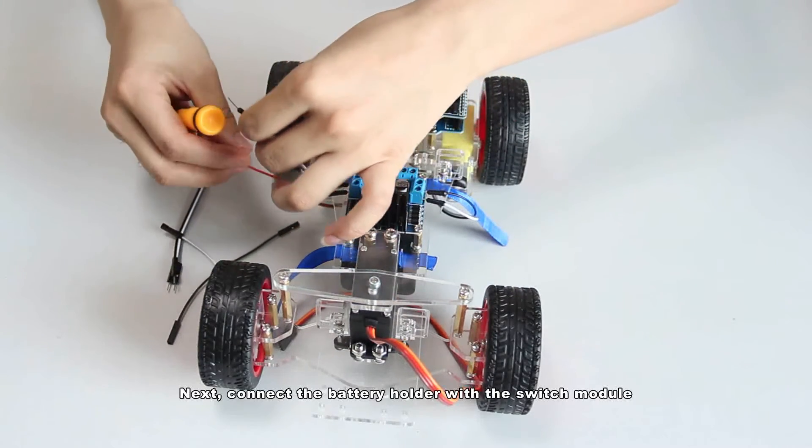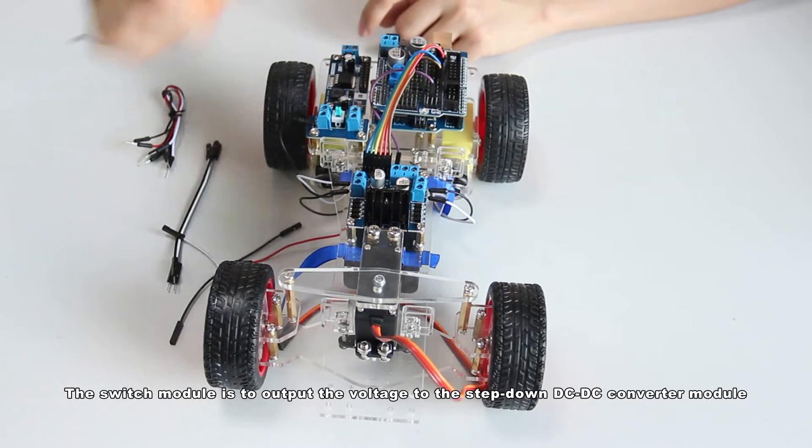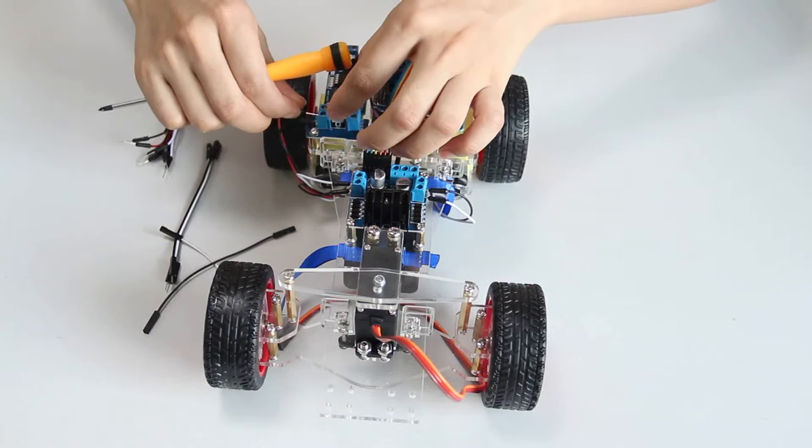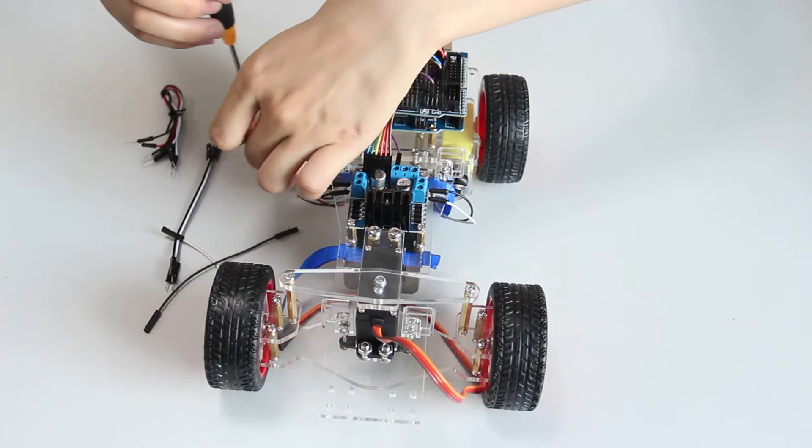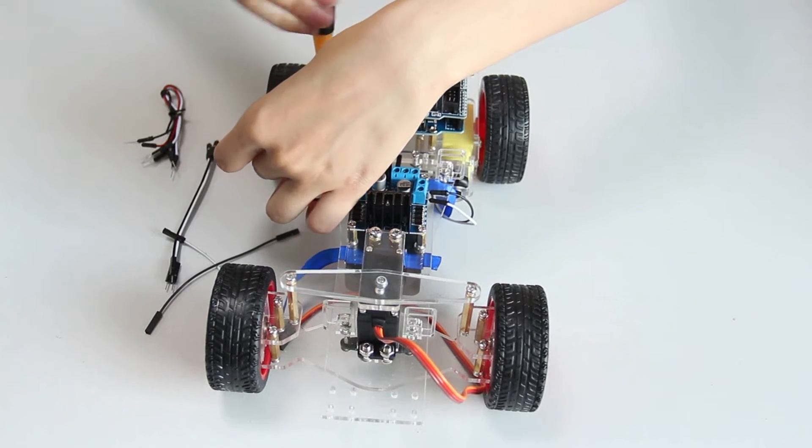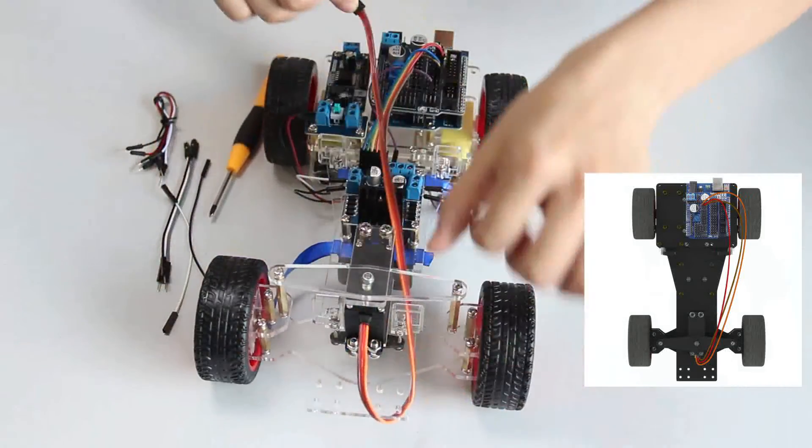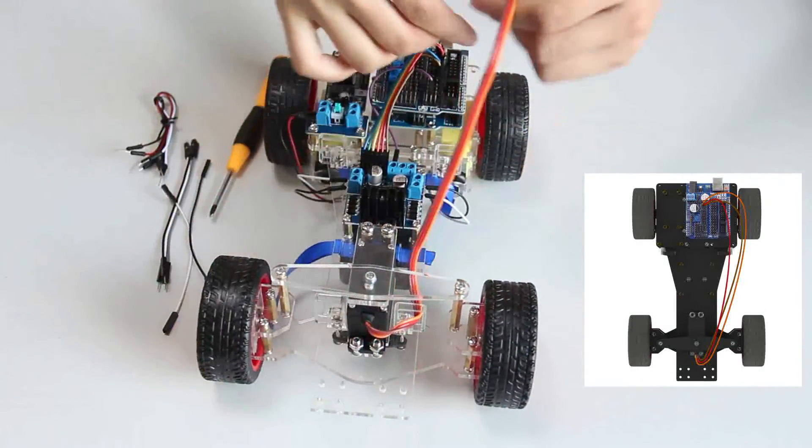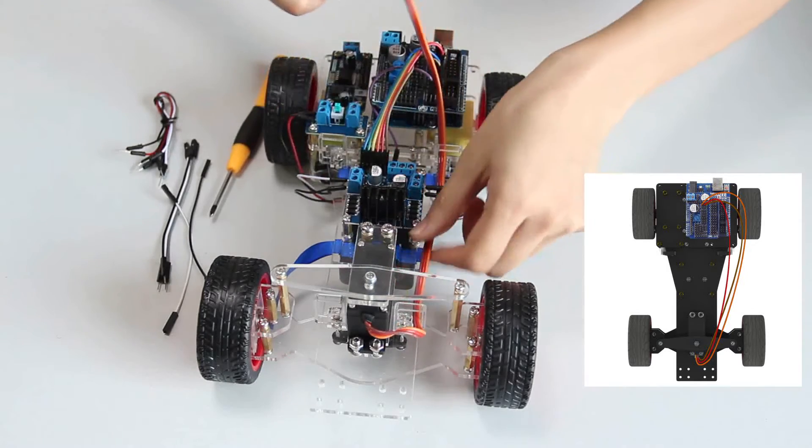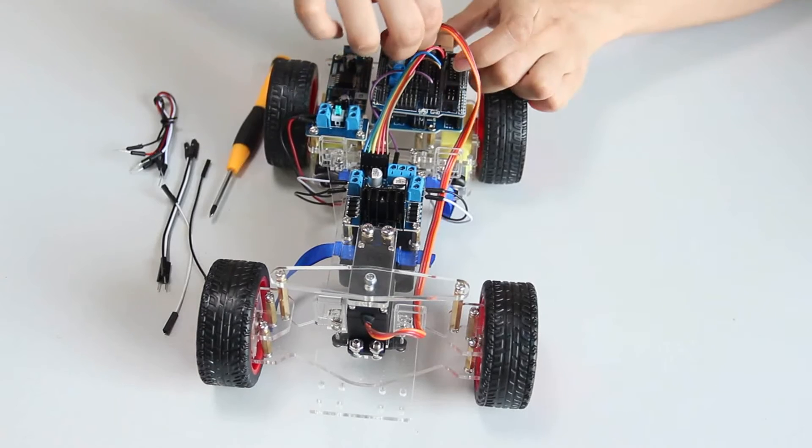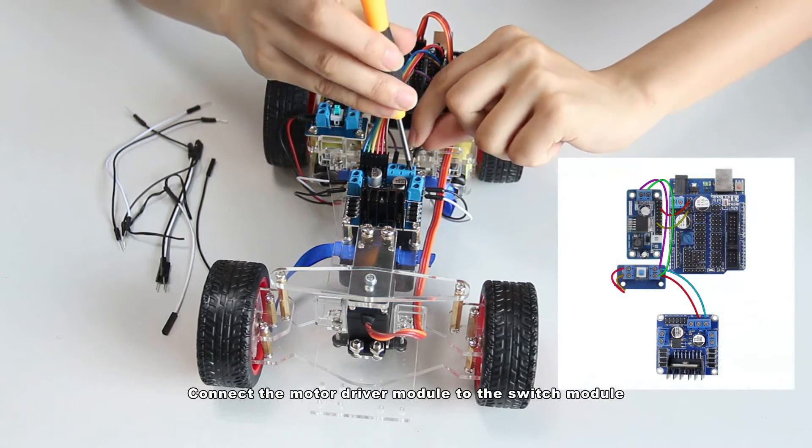Next, connect the battery holder with the switch module. The switch module is to output the voltage to the step-down DC-DC converter module, thus outputting 5V. Then connect the servo to the sensor shield. Connect the motor driver module to the switch module.